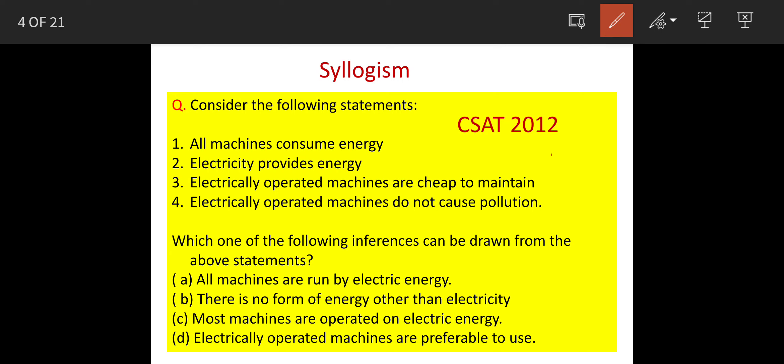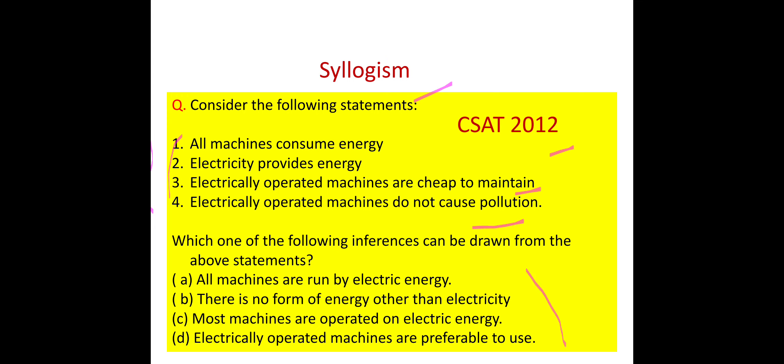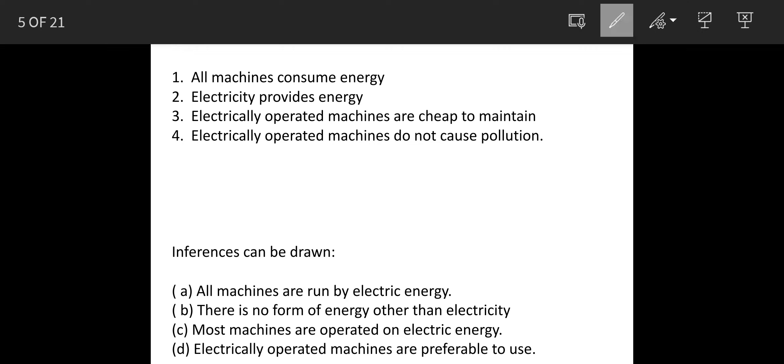So we have a question from CSAT 2012 on syllogism. Four statements are given about machines, electricity, pollution, and maintenance, and we have to find out which one is the correct inference. We will solve this by using a Venn diagram.